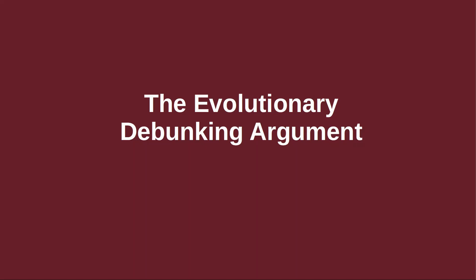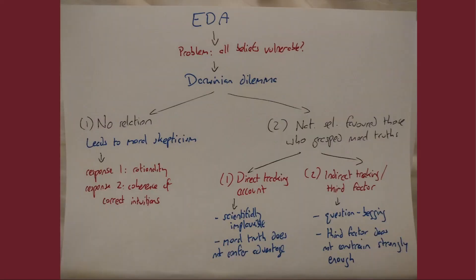This video is long and the arguments are quite tricky, so I've made a map of the video to give a broad outline. The video proceeds downwards and each time it splits we'll take the left side first. The evolutionary debunker is in blue and the realist response is in red. The options under the Darwinian dilemma are in black. Hopefully this will become clear as we go through the video. I'll put a link to the image in the description as well.